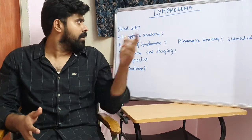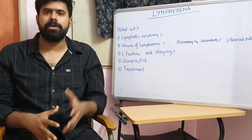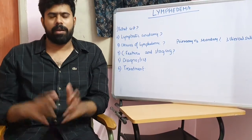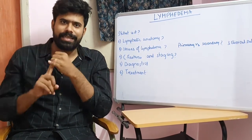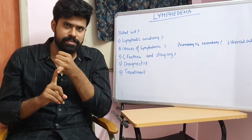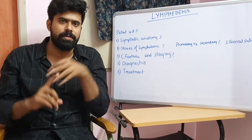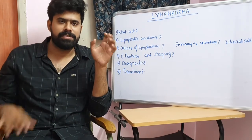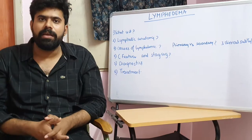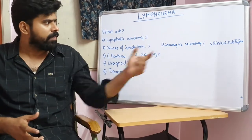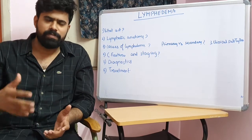Now, what are the causes of lymphedema? Either there is a congenital absence of lymphatic vessels, or there is an obstruction to the lymphatic vessels. Absence or maldevelopment of lymphatic vessels or lymph nodes is called primary lymphedema. Secondary lymphedema is usually caused by an obstruction from multiple reasons.